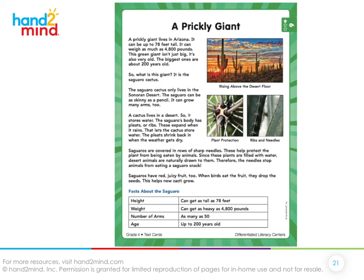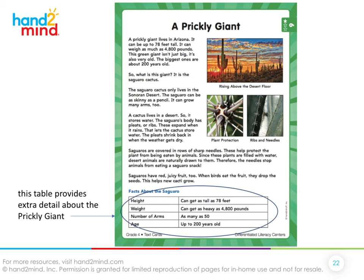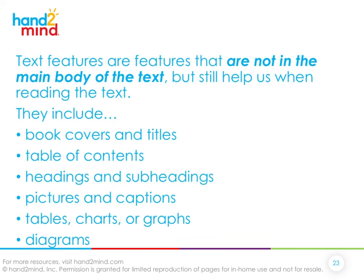Text features also include tables, charts, or graphs. In this case we're learning about a prickly giant — a big cactus — and we see a table at the bottom that provides extra details about it. They could be extra details not in the text, or they can help you organize important details that are in the text.